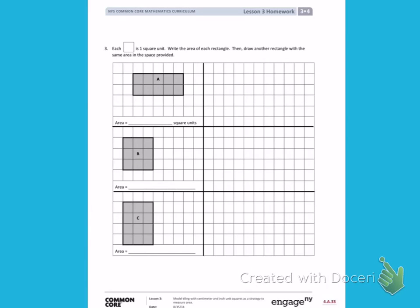This is Module 4, Lesson 3 on the back. Each square is one square unit. Write the area of each rectangle. Then, draw another rectangle with the same area in the space provided.